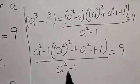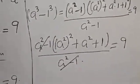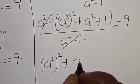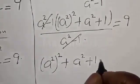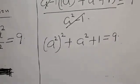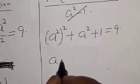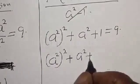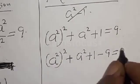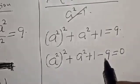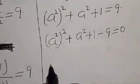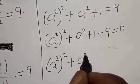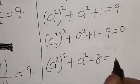The (a squared minus 1) terms cancel. We have a⁴ plus a squared plus 1 equal to 9. Equating everything to zero: a⁴ plus a squared plus 1 minus 9 equals 0, which simplifies to a⁴ plus a squared minus 8 equals 0.